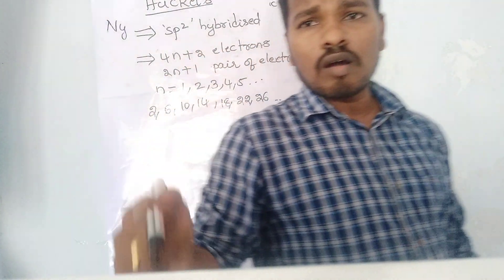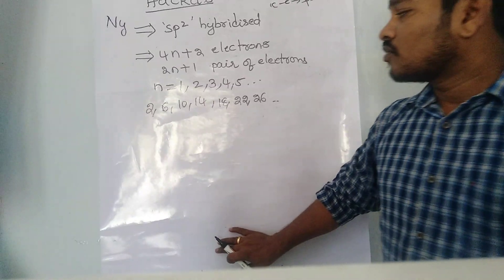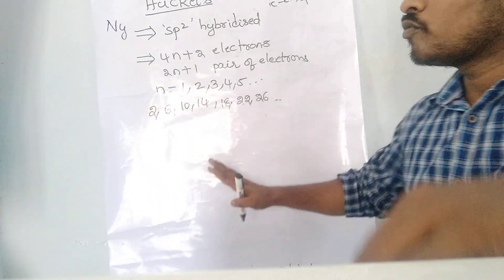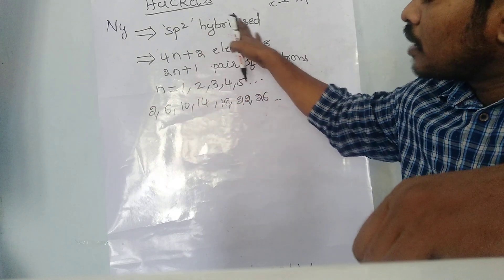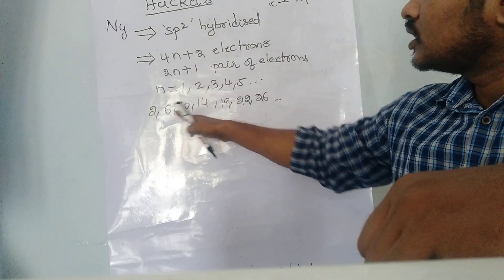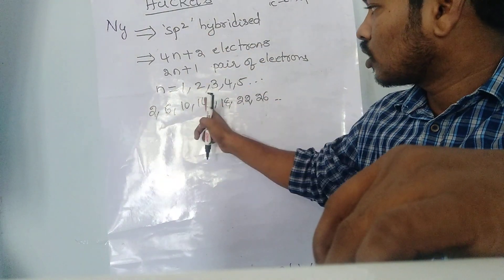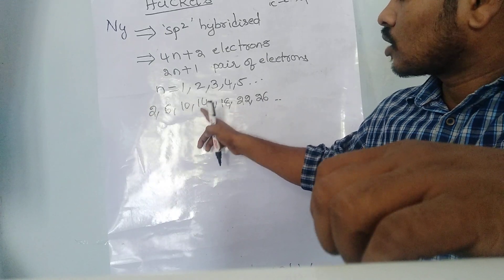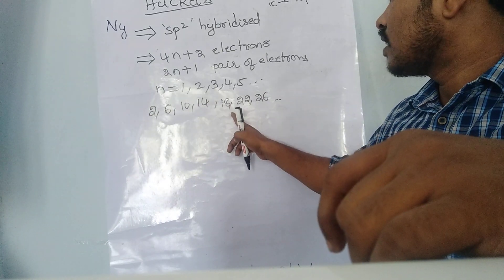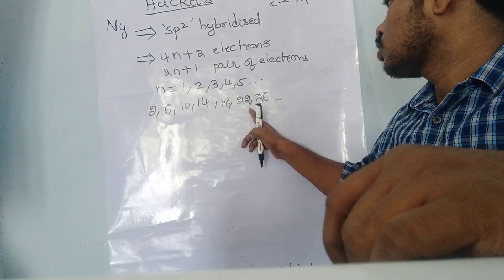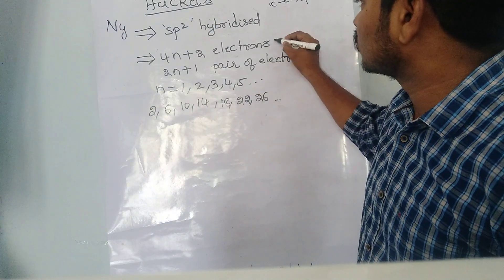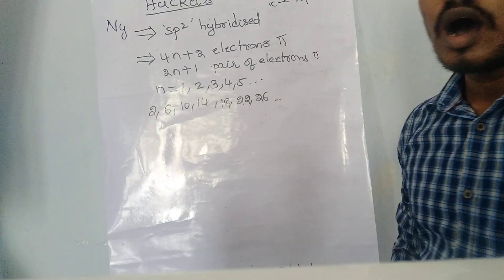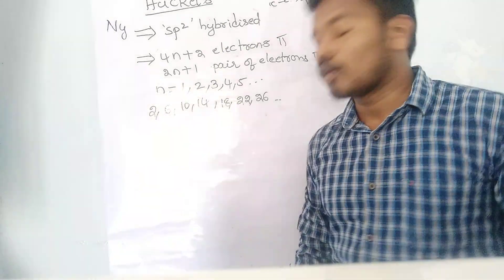So a system with a cyclic ring having sp2 hybridized carbons and containing these numbers of pi electrons — 2, 6, 10, 14, 18, 22, or 26 pi electrons — is called an aromatic compound.